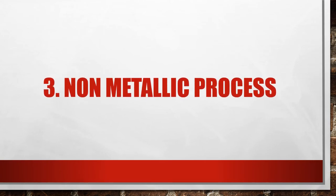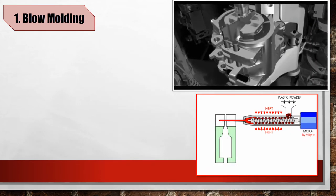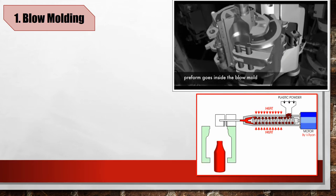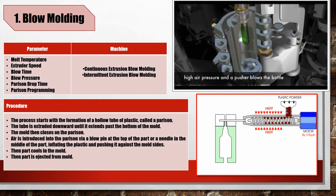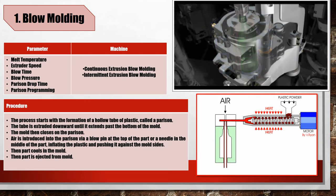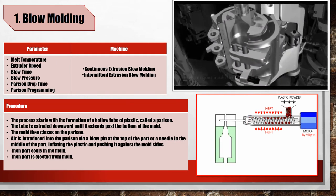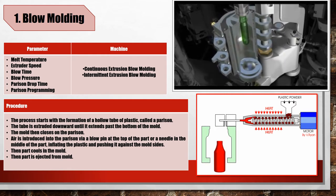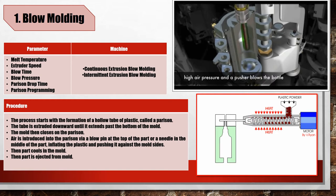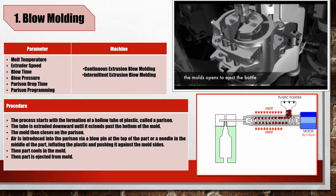Chapter 3: Non-metallic processes. First, plastic blow molding. Blow molding is one of the non-metallic processes suitable to fabricate PVC packaging products. The table shows the parameters and machines. The blow molding process starts with the formation of a hollow tube of plastic called a parison. The tube is extruded downward until it extends past the bottom of the mold. The mold then closes on the parison. Air is introduced into the parison via a blow pin at the top or a needle in the middle of the part, inflating the plastic and pushing it against the mold sides. The part then cools in the mold and is ejected.